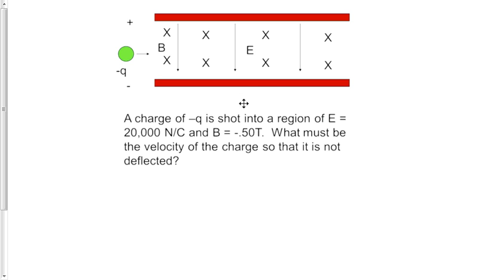This example is a velocity selector. You have an electric field going from a positive plate to a negative plate, and that is perpendicular to a magnetic field that's going into the page.